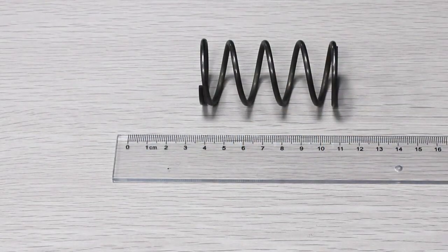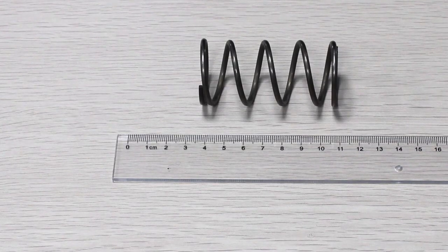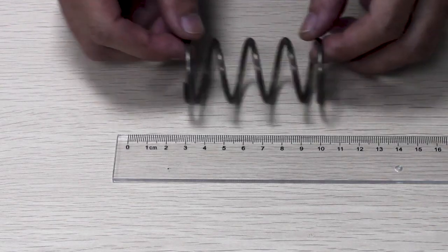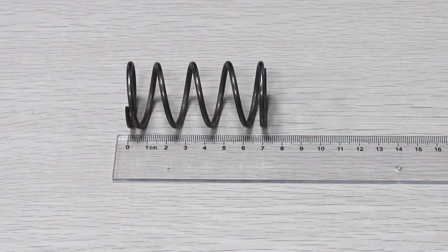Then we will measure the length. We use a ruler for this spring, but if your spring is smaller, we recommend using a micrometer or caliper. This spring is 70.2 millimeters long.